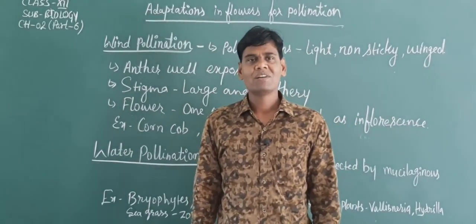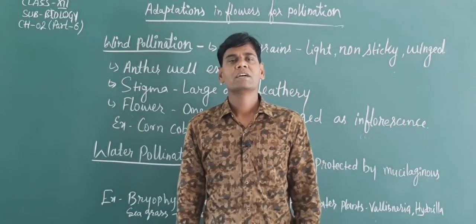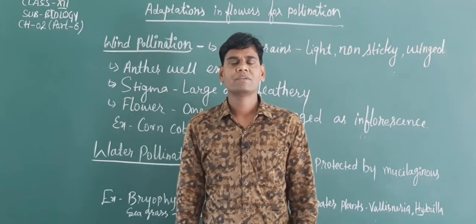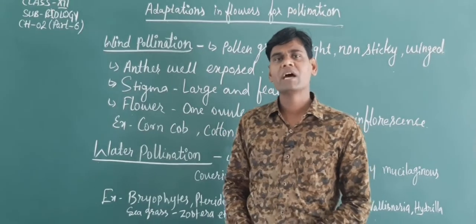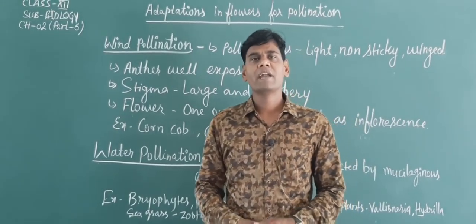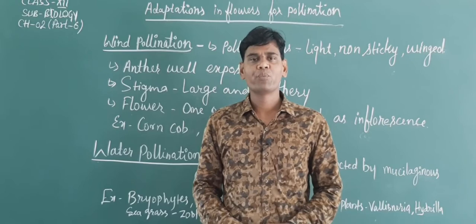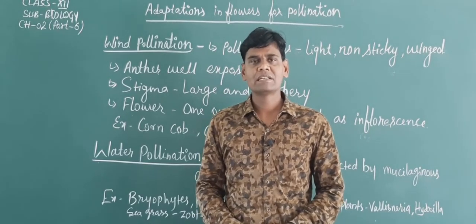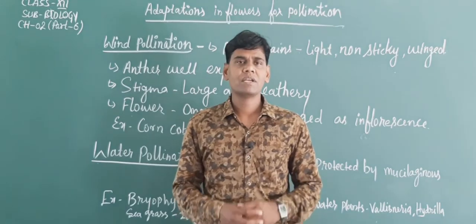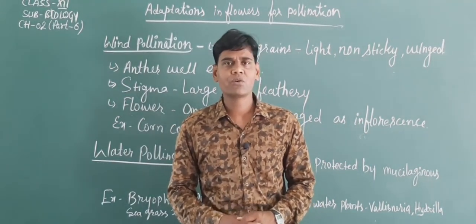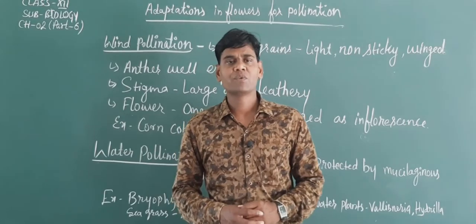Hello DA students, how are you all? In the previous video we discussed about pollination and its types, self-pollination and cross-pollination. In this video we are going to discuss about adaptation in flowers for pollination, out-breeding devices, pollen-pistil interaction, and artificial hybridization. So dear students, let me start our first topic: adaptation in flowers for pollination.